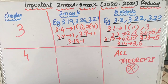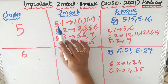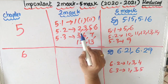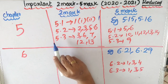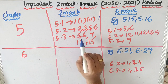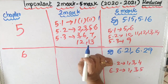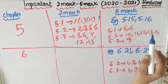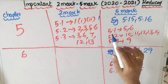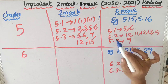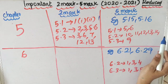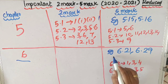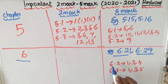In the fifth chapter, 5.1 exercise first question, second subdivision is important. 5.2 exercise first question, questions 1, 2, 3, 5, and 6 are important. 5.3 exercise questions 3, 6, 7, 12, and 13 are important. For the 5-mark questions in chapter 5, examples 5.15 and 5.16 are important. 5.1 exercise first question, questions 5 and 6 are important.